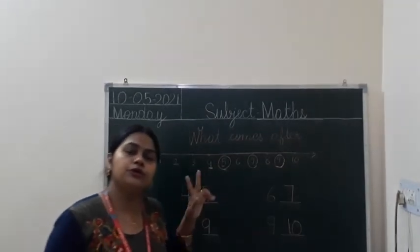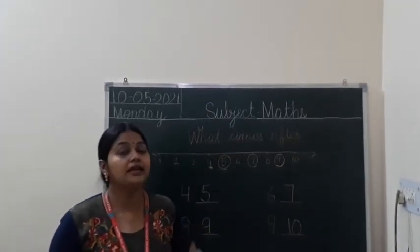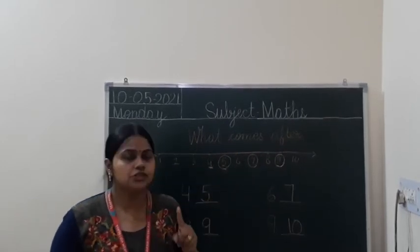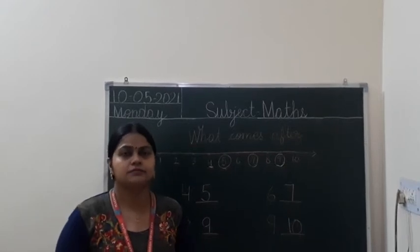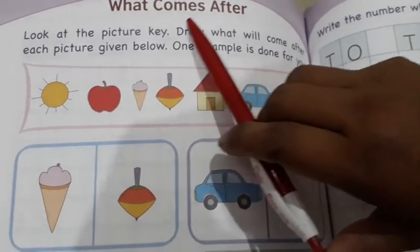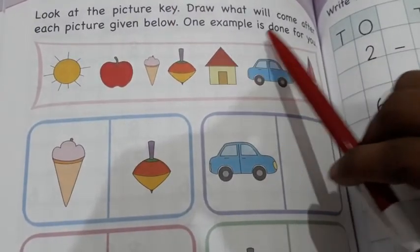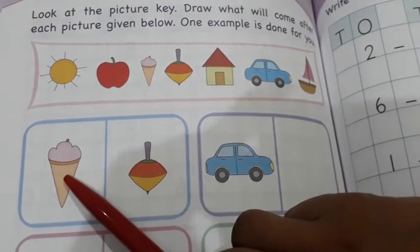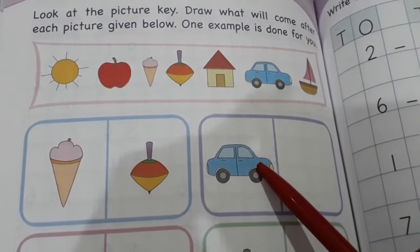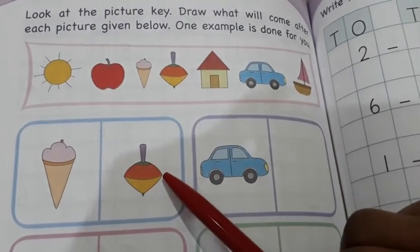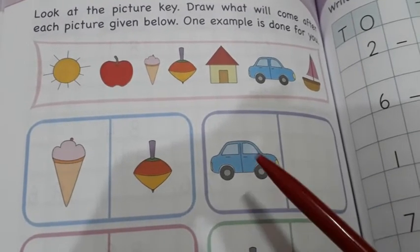Now I want to show you 2 pages of your maths book that you have to complete. This is page number 68. Look at the picture key — draw what will come after each picture given below. One example is done for you. Here we can see ice cream and a top. What comes after ice cream? Top. So here is a picture of a top.